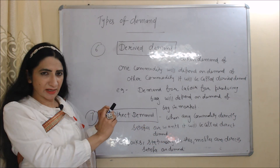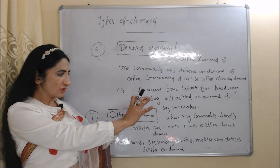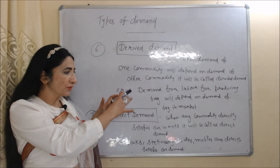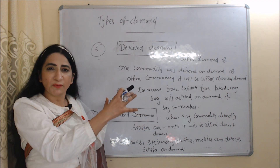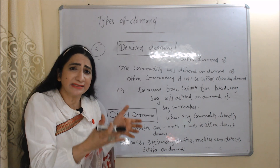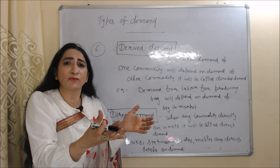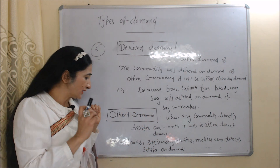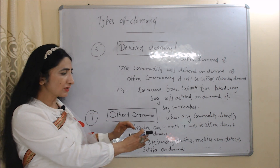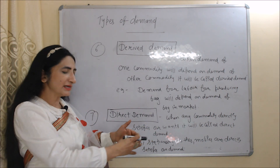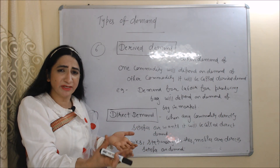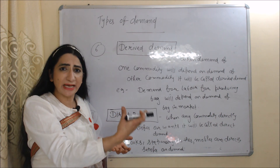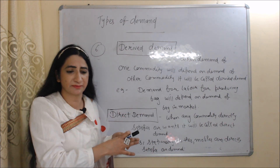Next is direct demand. When any commodity directly satisfies our wants, it will be called direct demand. For example, books, stationery, clothes, and mobiles directly satisfy our demand — we are not buying these products for producing anything, we directly use them.